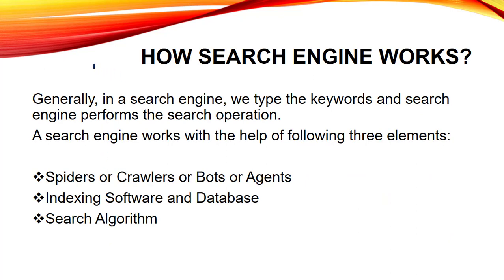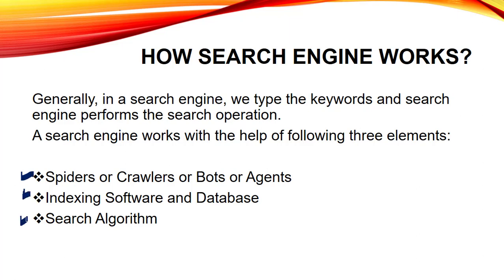Our basic objective now is to learn how search engines generally work. This question is commonly asked in exams — they may ask about the components of a Google search, the components of a simple search engine, or how a search engine works, and there can be a long question about it. For all these questions your answer will be the same. Generally whenever we search something we type a keyword in the search engine and then the search engine performs the search operation. A search engine works with the help of three elements: the first is spiders or crawlers or bots or agents; the second is indexing software and database; and the third is search algorithm. Only these three components help us to search something from the web.